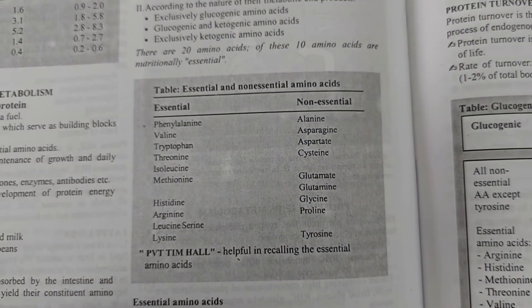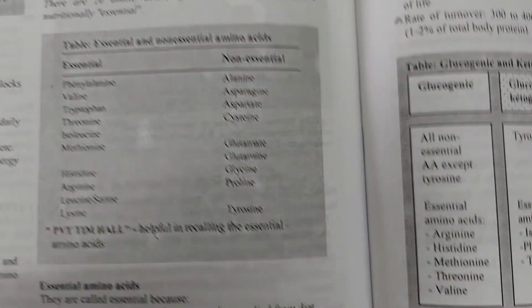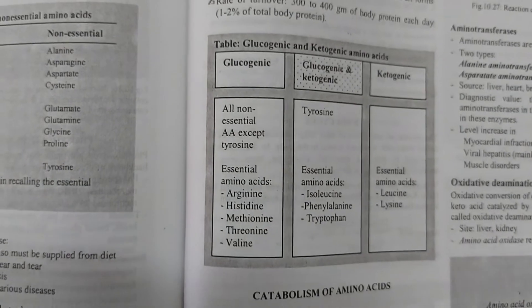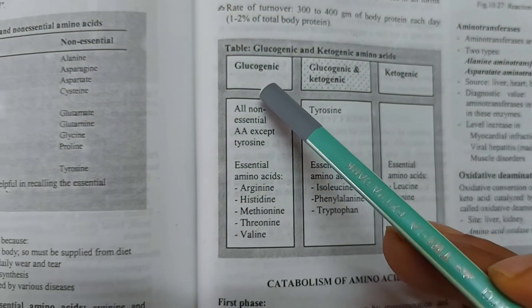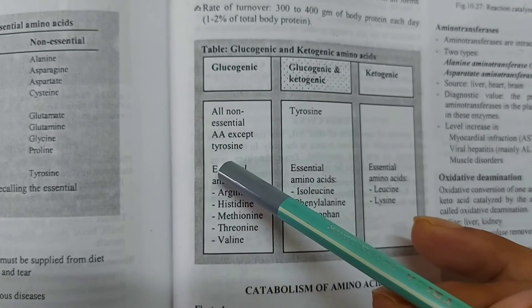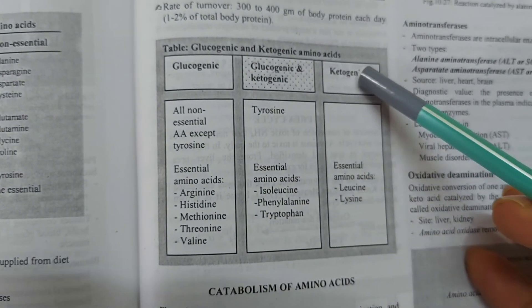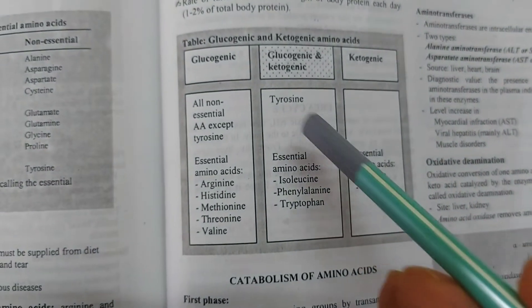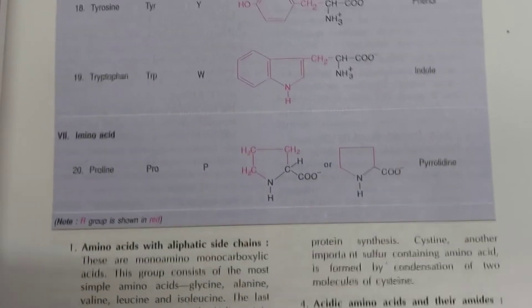Sometimes we classify amino acids based on their energy-producing properties — like glucogenic amino acids, which can produce glucose. Some amino acids are ketogenic amino acids, and some have both glucogenic and ketogenic properties. These are the different classifications of amino acids.